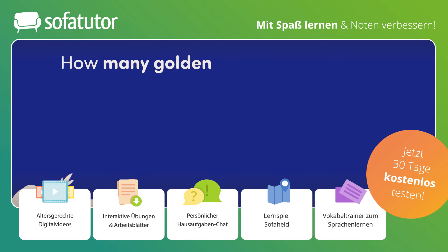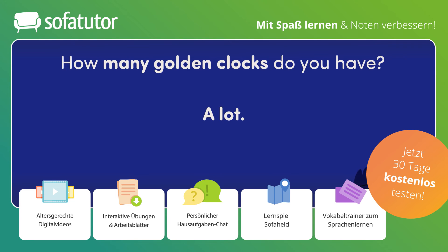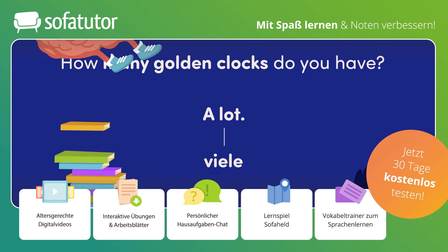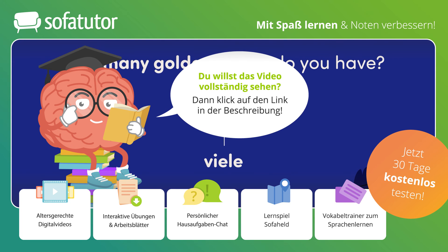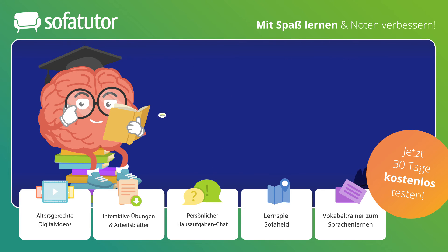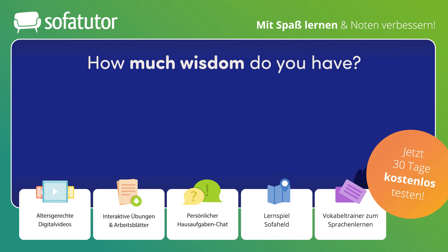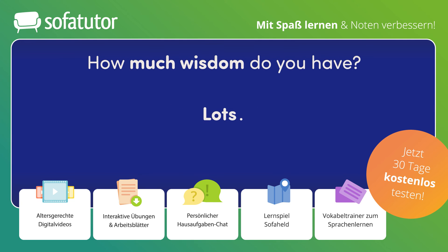How many golden clocks do you have? Wie viele goldene Uhren hast du? A lot. Viele. Beachte: in Maggies Antwort entfällt nicht nur das Substantiv, sondern auch 'of'. Würde Maggie fragen: How much wisdom do you have? Wie viel Weisheit hast du? Könnte Minervas Antwort lauten: Lots of wisdom. Oder ganz salopp: Lots. Viel.